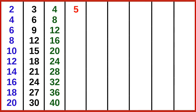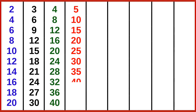5 ones are 5, 5 twos are 10, 5 threes are 15, 5 fours are 20, 5 fives are 25, 5 sixes are 30, 5 sevens are 35, 5 eights are 40, 5 nines are 45, 5 tens are 50.